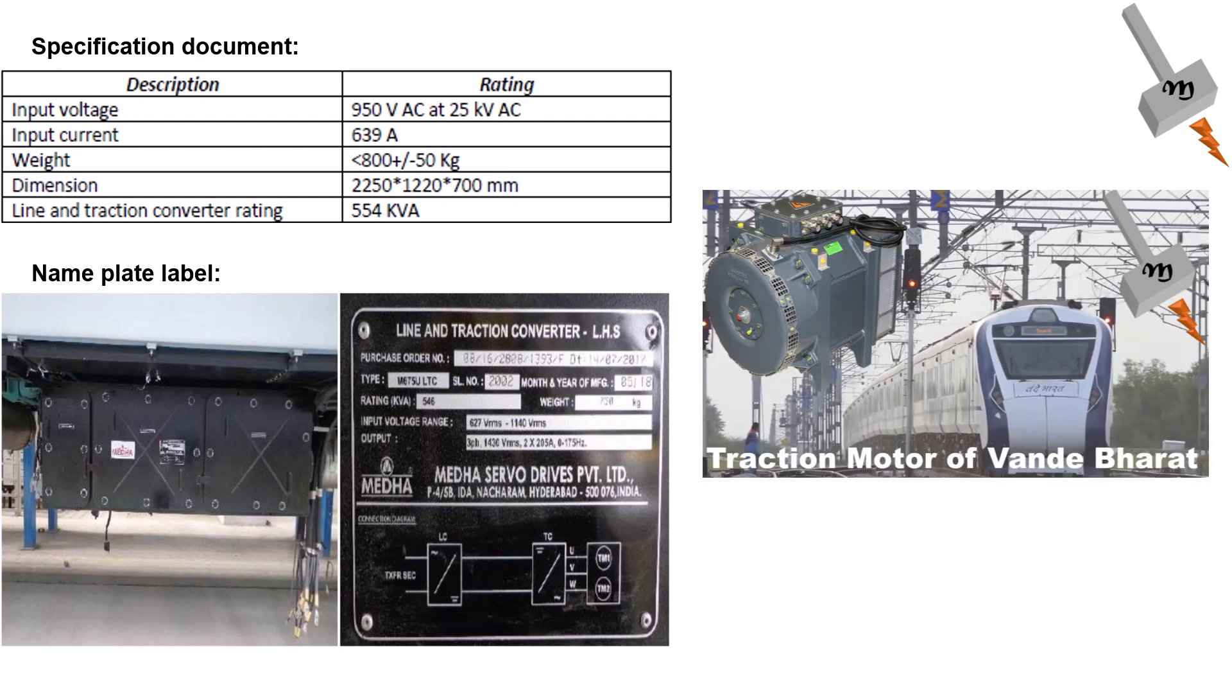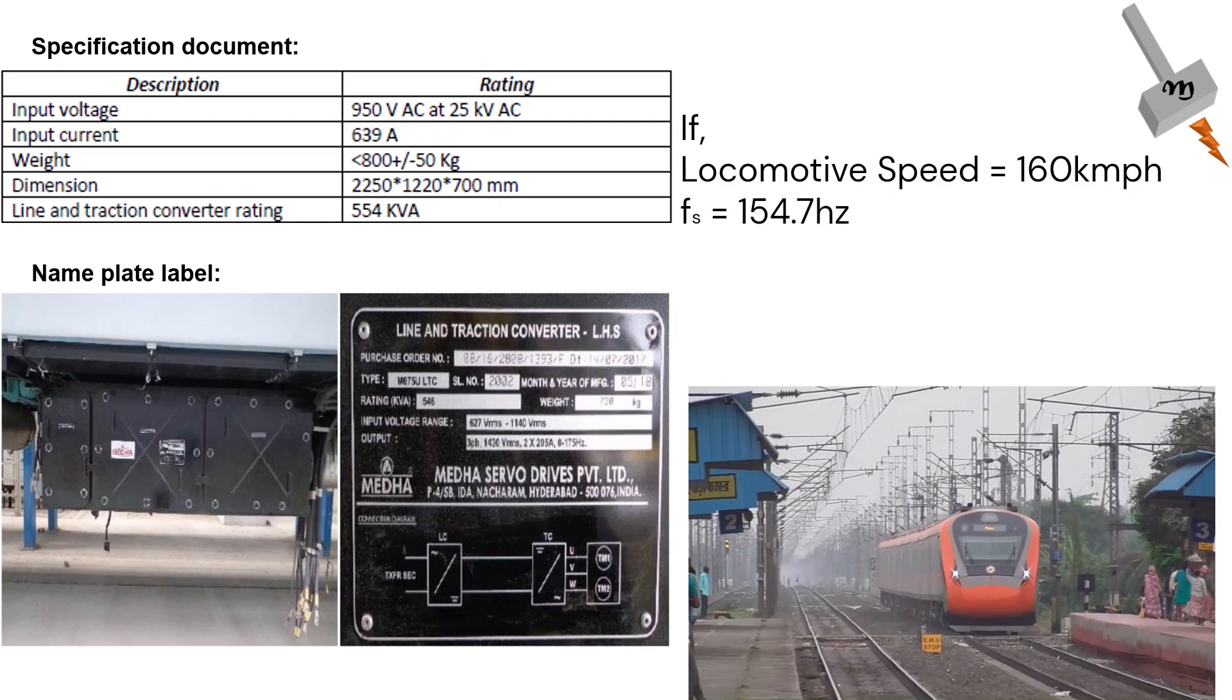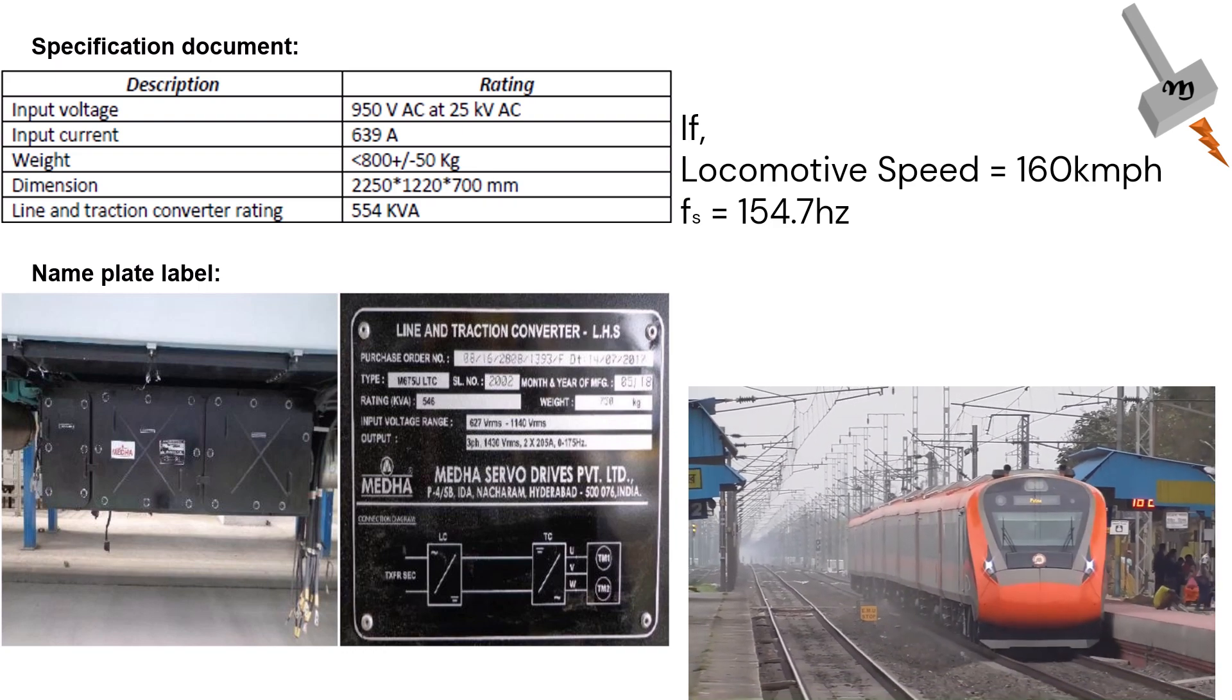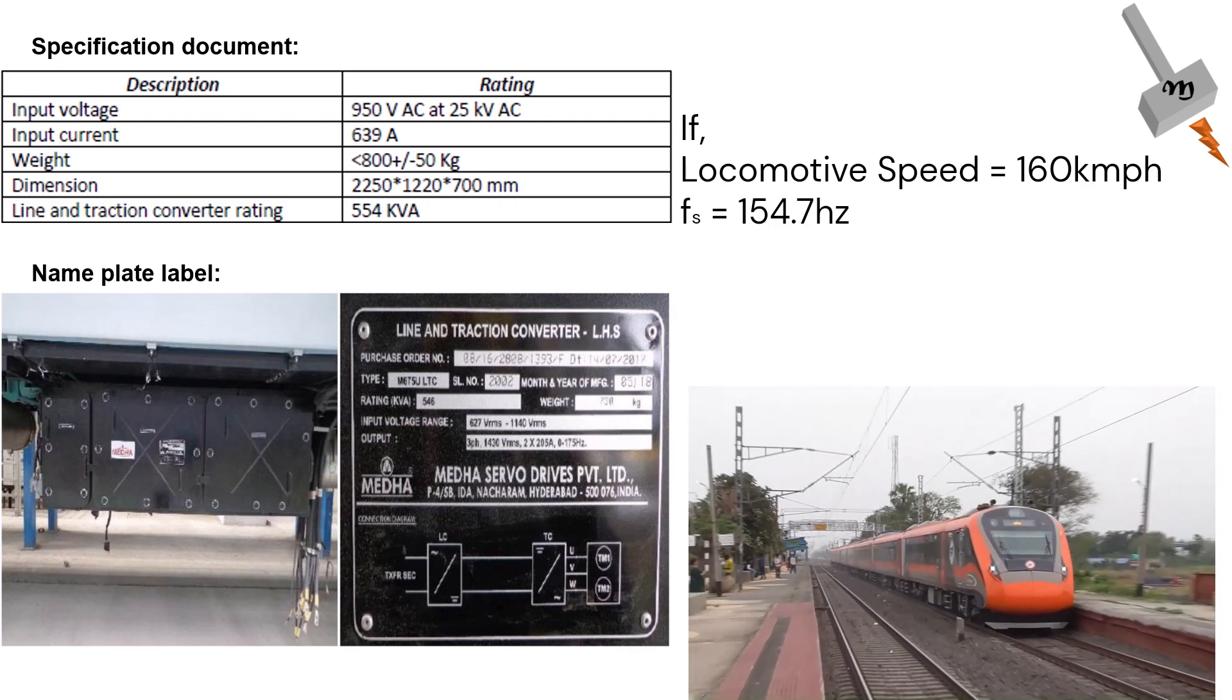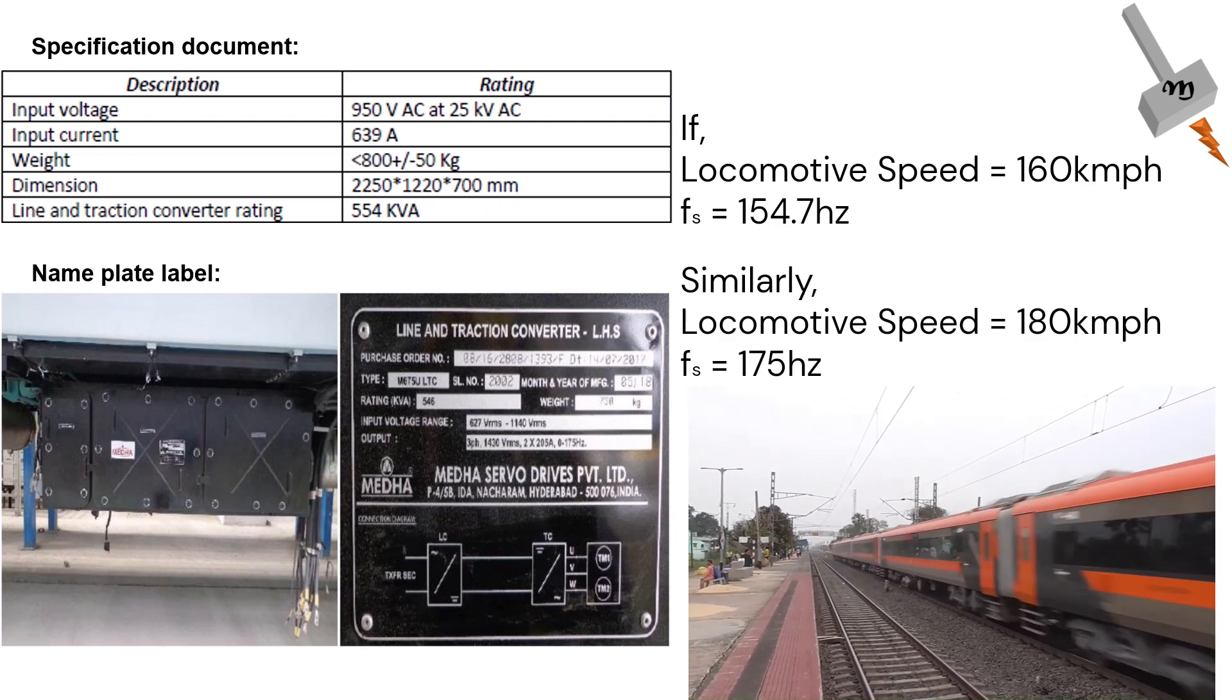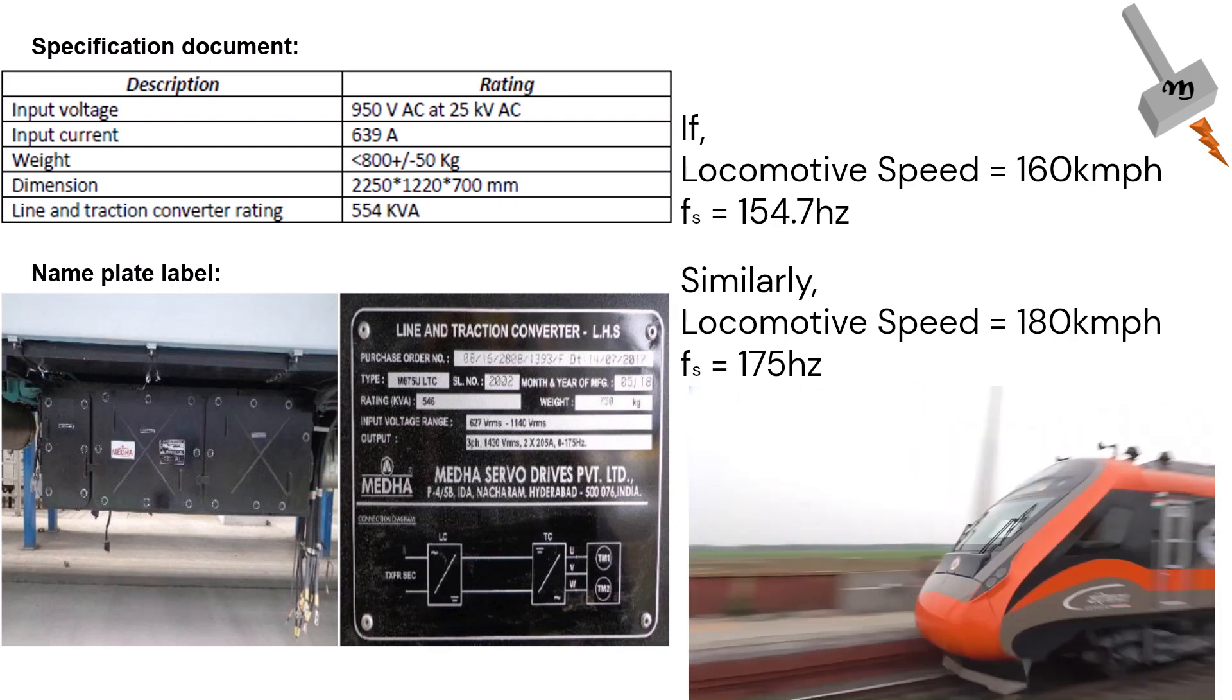If you have seen our previous videos on the traction motor of Vande Bharat, it was told that the converter needs to give output power at a frequency of 167.5 hertz to achieve top speed of 160 km per hour. Using the same formula stated in the last video, if the traction inverter output is 175 hertz, then the Vande Bharat can be propelled at 180 km per hour, which is the speed at which Vande Bharat had been tested.